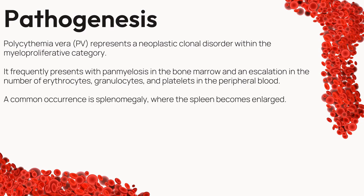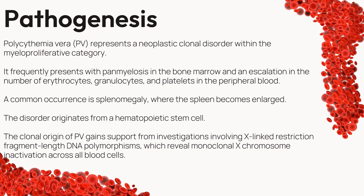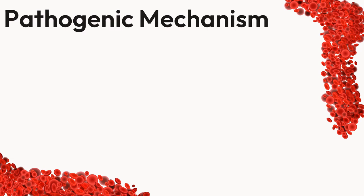An all-too-common occurrence is splenomegaly, where the spleen enlarges due to the overproduction of these blood components. The tale of PV starts at the very beginning with a hematopoietic stem cell, the origin of all blood cells — it's from this point that the neoplastic journey unfolds. Scientific investigations have illuminated the clonal nature of PV: X-linked restriction fragment length DNA polymorphisms reveal a telltale sign of monoclonal X chromosome inactivation across all blood cells.